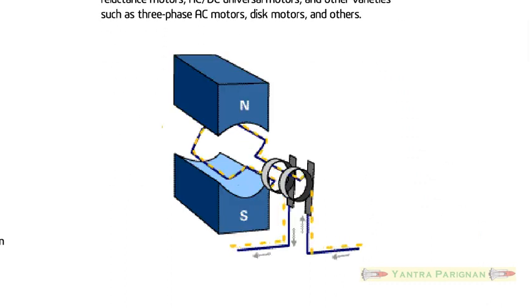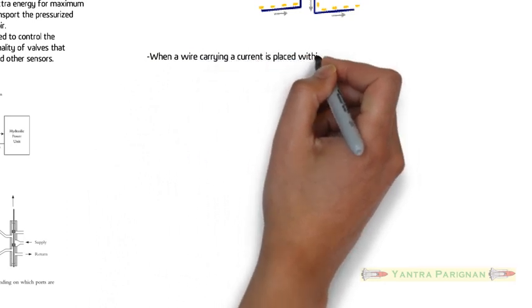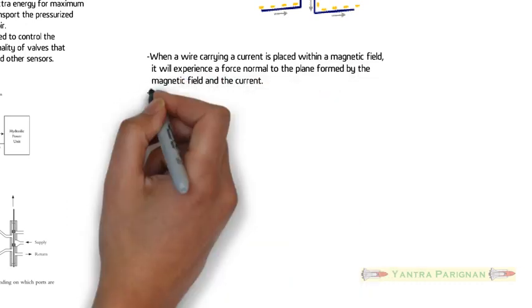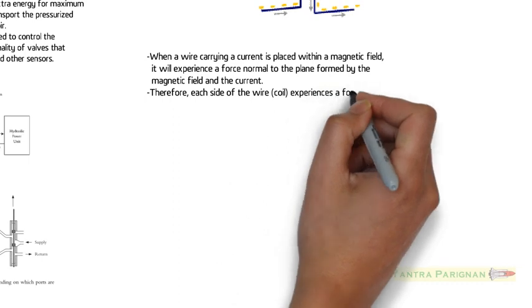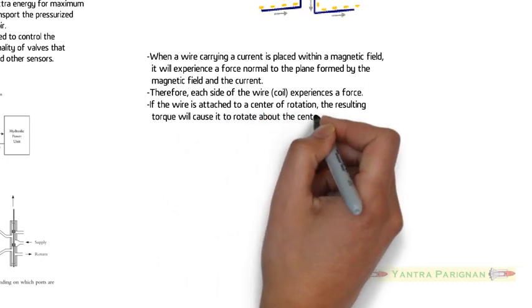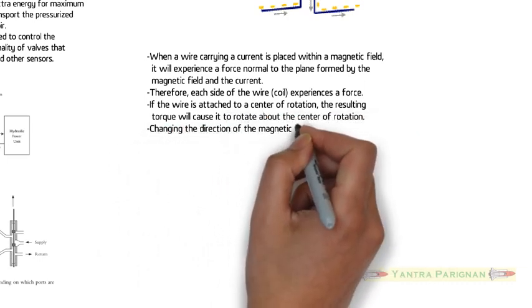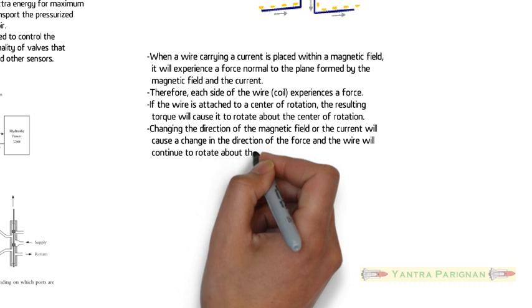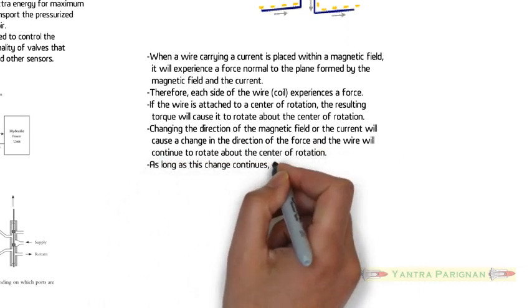Figure shows the basic principle behind electric motor. Here there is a wire carrying a current placed within a magnetic field to experience force on each side of the wire which results in torque to rotate about the center. When a wire carrying a current is placed within a magnetic field, it will experience a force normal to the plane formed by the magnetic field and the current. Therefore each side of the wire, that is the coil, experiences a force. If the wire is attached to a center of rotation, the resulting torque will cause it to rotate about the center of rotation. Changing the direction of the magnetic field or the current will cause a change in the direction of the force and the wire will continue to rotate about the center of rotation.